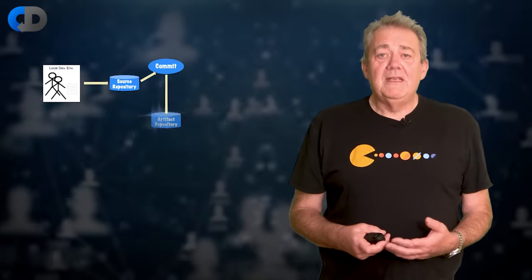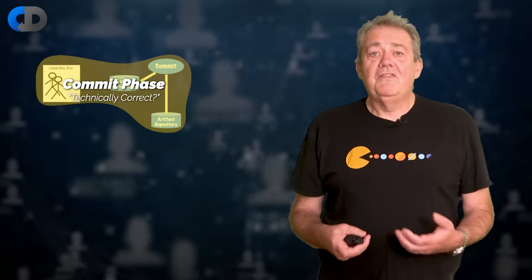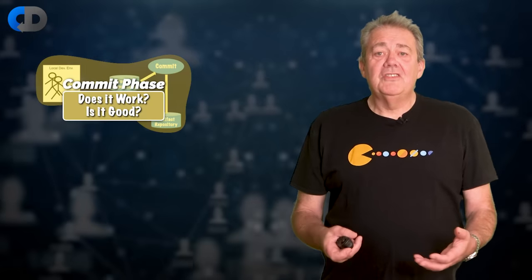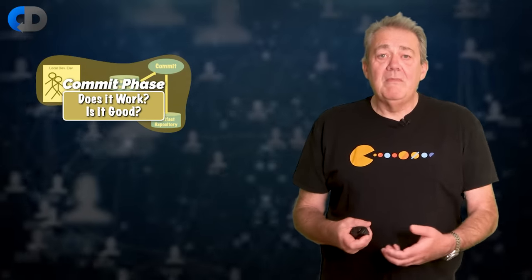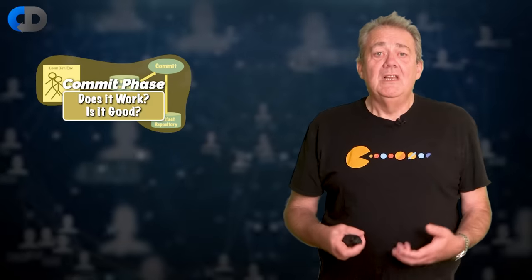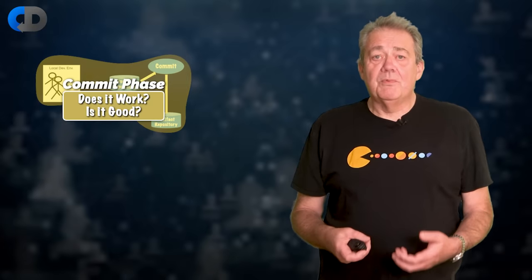Phase one of the deployment pipeline is the commit phase. This is focused on providing great feedback on design choices to the development team. Does this code do what I think it does? Does this keep my code in a state that means that changing it later will be easy? Is my code nice to use and nice to understand? Fundamentally, does it work and is it good — meaning have we solved the problem and does the code exhibit properties that make it easy to change?